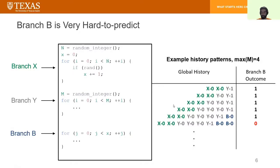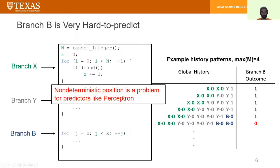But it also has an additional interesting effect that because the number of iterations of the new loop is non-deterministic, it makes the position of Branch X in the global branch history non-deterministic as well which is particularly bad for predictors like Perceptron which rely on the exact position of branches in the global history.